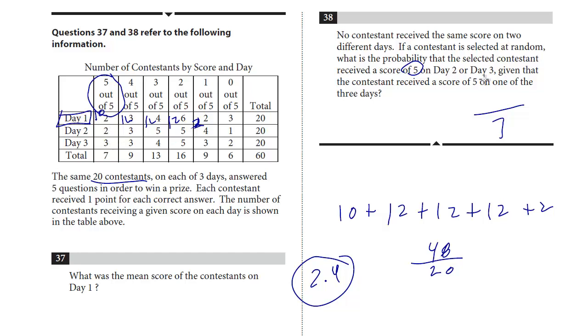Three on day three. It's just five. That's it. So this is a pretty basic question, I think, for number 38. And the answer is five over seven.